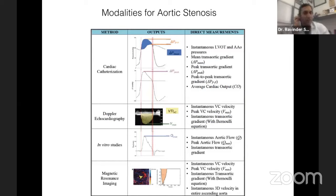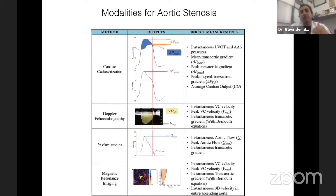What are the modalities for assessing aortic stenosis? Cardiac catheterization involves going into the heart, crossing the aortic valve, measuring pressure in the left ventricle and aorta to get gradients — instantaneous pressure measurements, mean aortic gradient, peak gradient, and peak-to-peak gradient — as well as measuring cardiac output. With Doppler echocardiography, which is the most common test in clinical practice, we get instantaneous velocity, peak velocity, and peak and mean gradients.